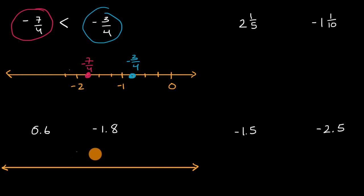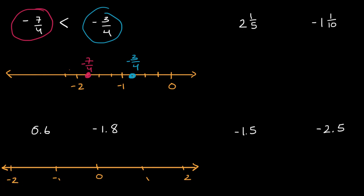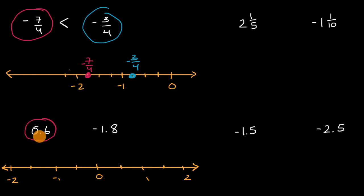Let me put zero right over here. That's one. That's two. This is negative one. This is negative two. And let me make half marks here so we can get a little bit closer to thinking about where these two numbers sit on the number line. I'll start with 0.6. You could view that as 6 tenths — it's a little bit more than 5 tenths, a little bit more than a half. So 0.6 is going to be roughly right around here on our number line.